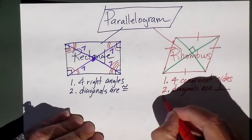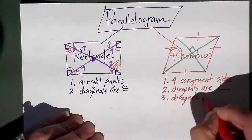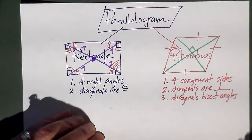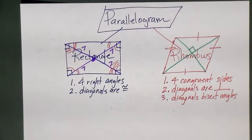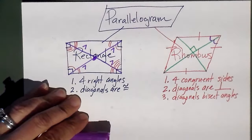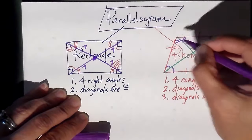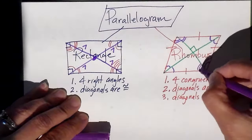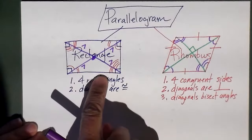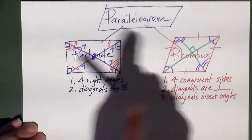There's another property: the diagonals actually bisect the corner angles. What I mean by bisect is this angle and this one are going to be exactly the same, that one and that one are exactly the same, and so on. It actually cuts the angles in half. That doesn't happen in a rectangle or in a generic parallelogram — it only happens in a rhombus.